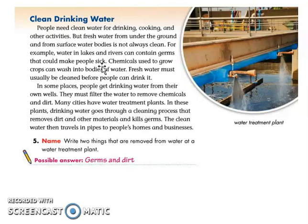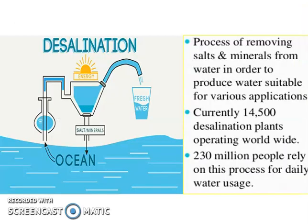Did you know that in places like Saudi Arabia, they use salty water as drinking water? They use a special process called desalination. Desalination is the process of removing salt and minerals from salty water. There are 14,500 desalination plants or factories operating worldwide. Because 97% of Earth's water is salty and most regions only have salty water, many countries use this process. About 230 million people rely on desalination.